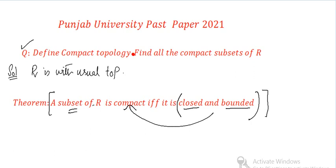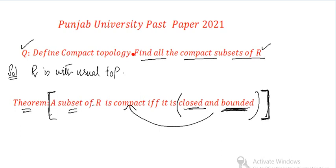I will give you the reference link in the description of this video. So when you have a question in the paper — find all the compact subsets of the topological space R with the usual topology — you have to apply this theorem. The theorem is the answer: the compact subsets are exactly the closed and bounded subsets.